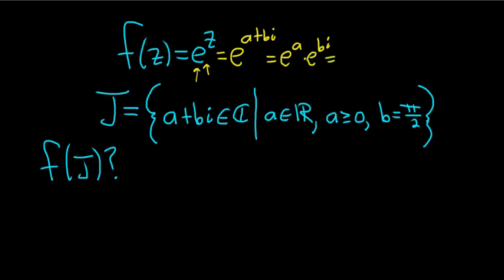And then you can go further and use Euler's formula on e to the bi, and write this as e to the a times cosine b plus i sine b. And this lets us think a little bit more clearly about the problem.